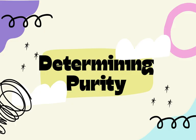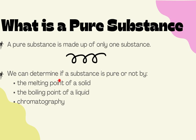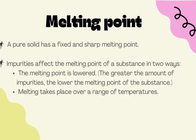How do we determine if a solid or liquid is pure? We use the melting point and boiling point. A pure substance will have a fixed and sharp melting point. When impurities are present, the melting point is lowered — for example, ice has a melting point of 0°C, but with impurities it may drop to around −4°C — and melting takes place over a range of temperatures, from −4°C up to perhaps −1°C.